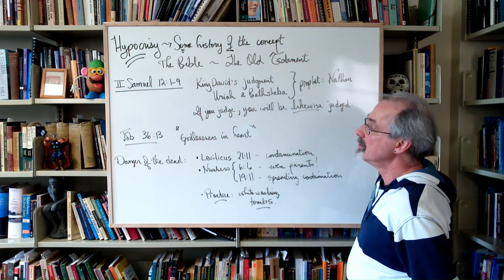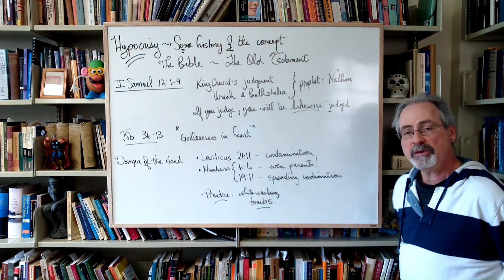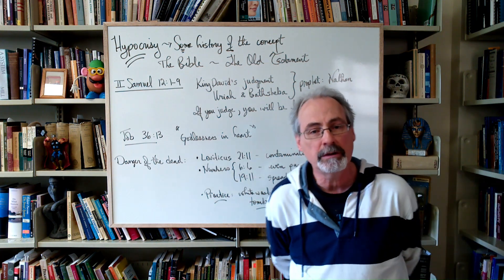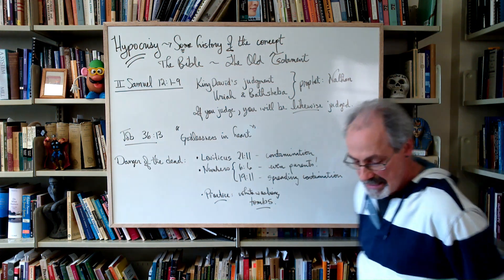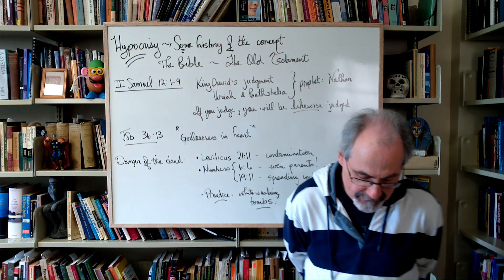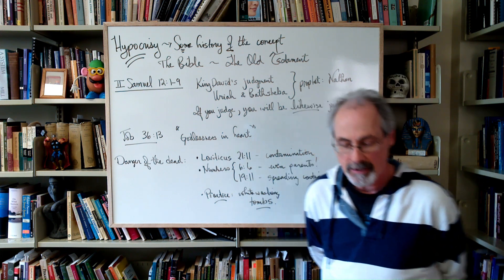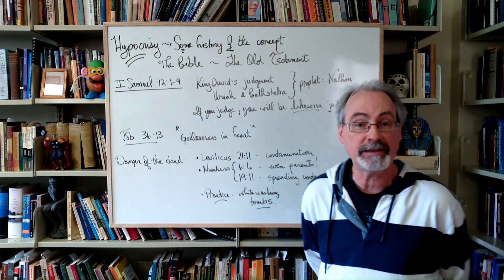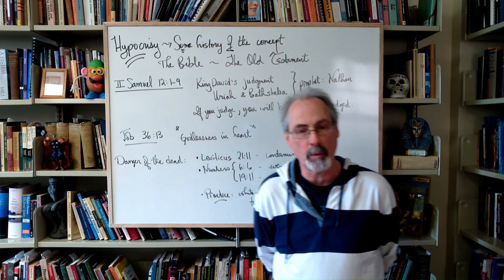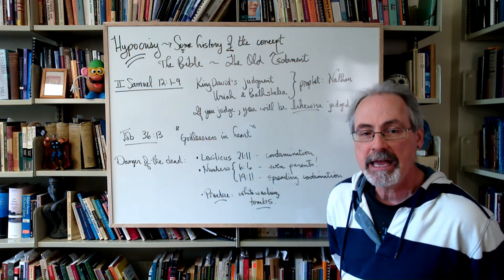So in 2 Samuel 12, 1 to 9, you can have a look at that. That's a really interesting little parable. It's a discussion of King David's judgment. Basically, King David is a king, so he's thrown his weight around. And God's not happy about this, because he's not ruling in a proper way, in a decent way. He's not respecting the population. And basically, he's arguably kind of stealing from them.